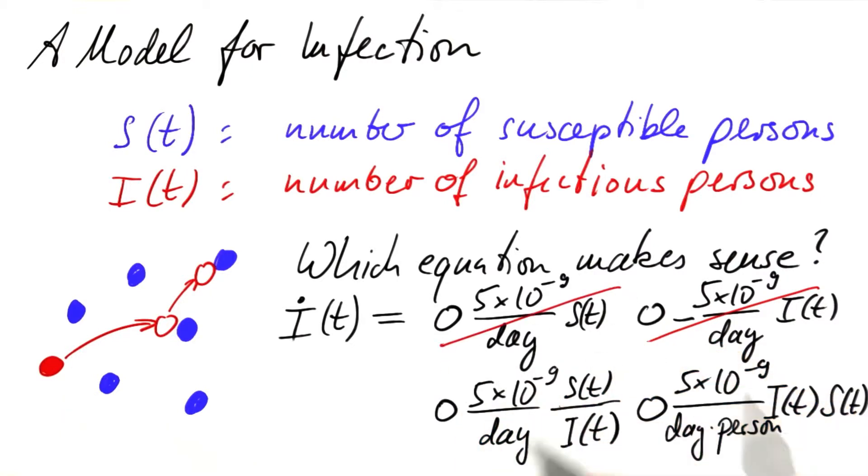This does not make sense. So we have to have a solution that incorporates both quantities, the number of susceptible persons and the number of infectious persons.